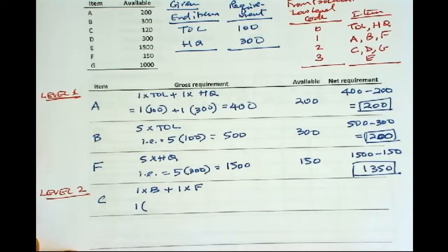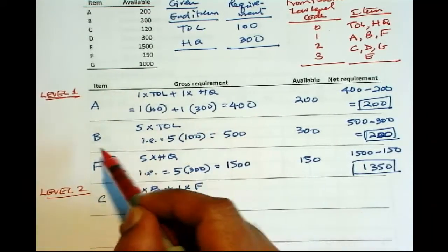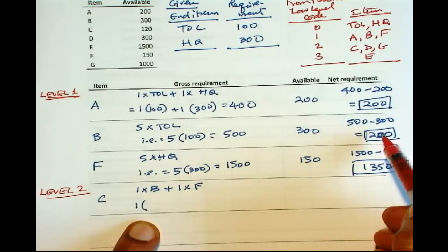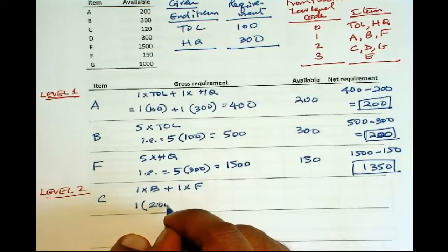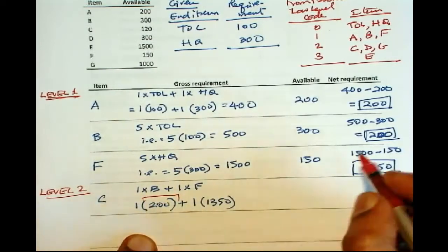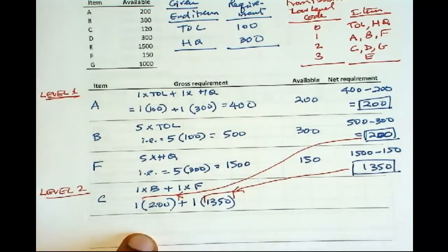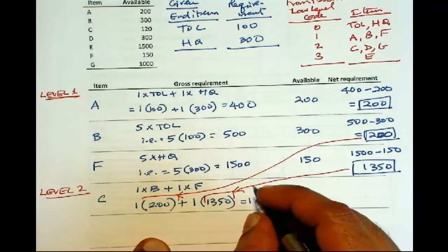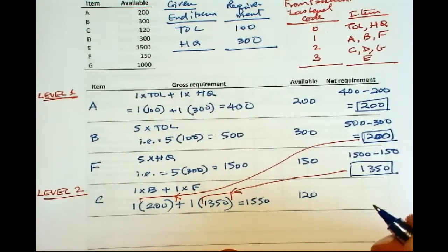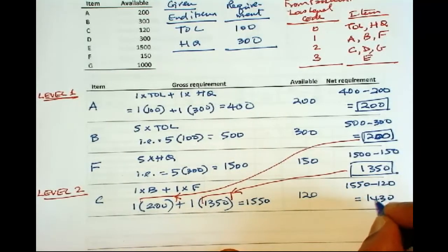Now remember, this is from the net requirement. Don't use this quantity. This is the gross requirement for B of which 300 are already available. You need to only make 200 of B. So when you use 200, then 1 times F is 1350. So this 200 comes from there. And this 1350 comes from there. So it gives you 1550. And C is 120, the available inventory. So 1550 minus 120 is 1430.